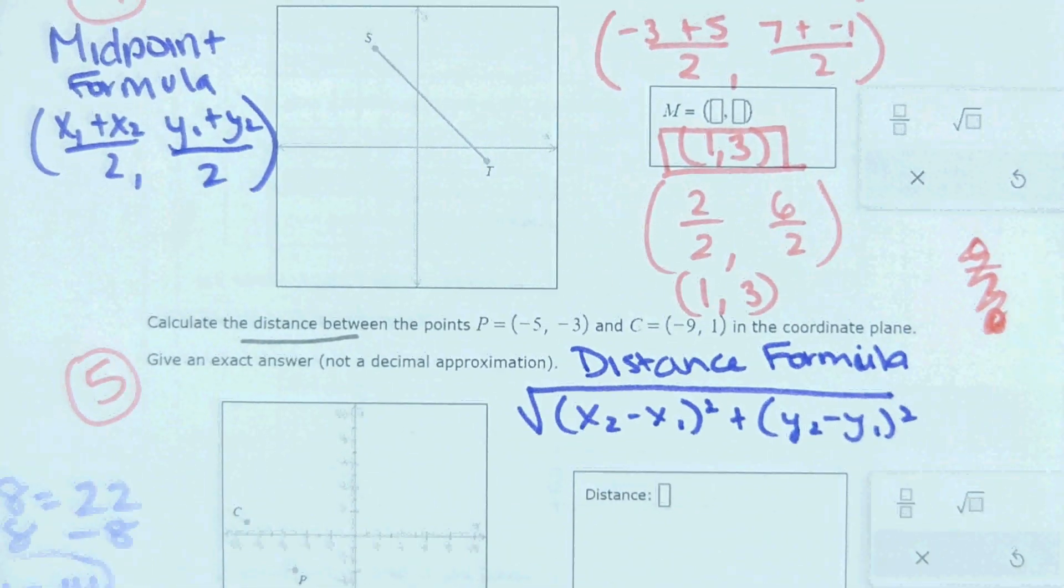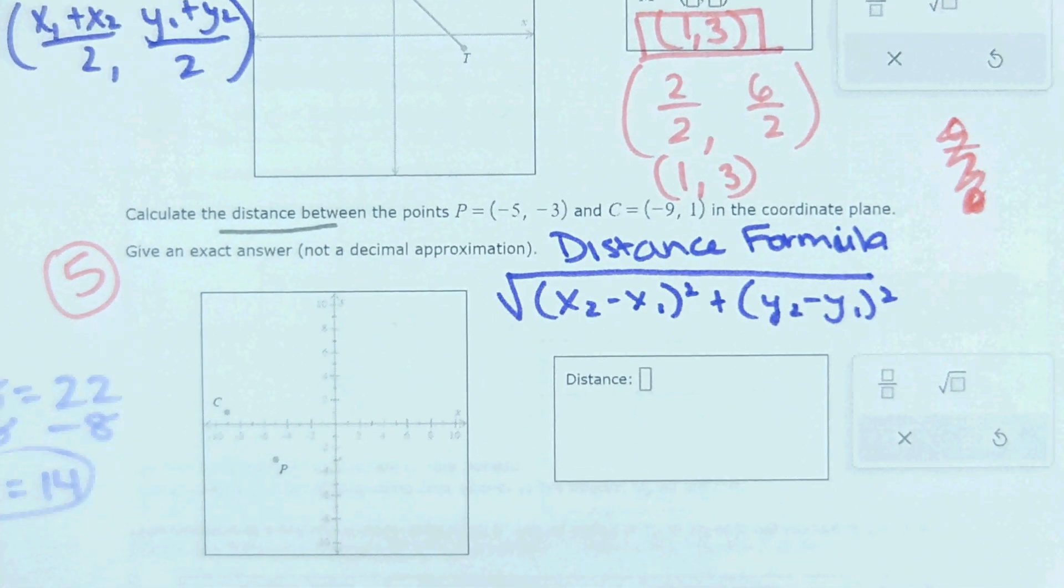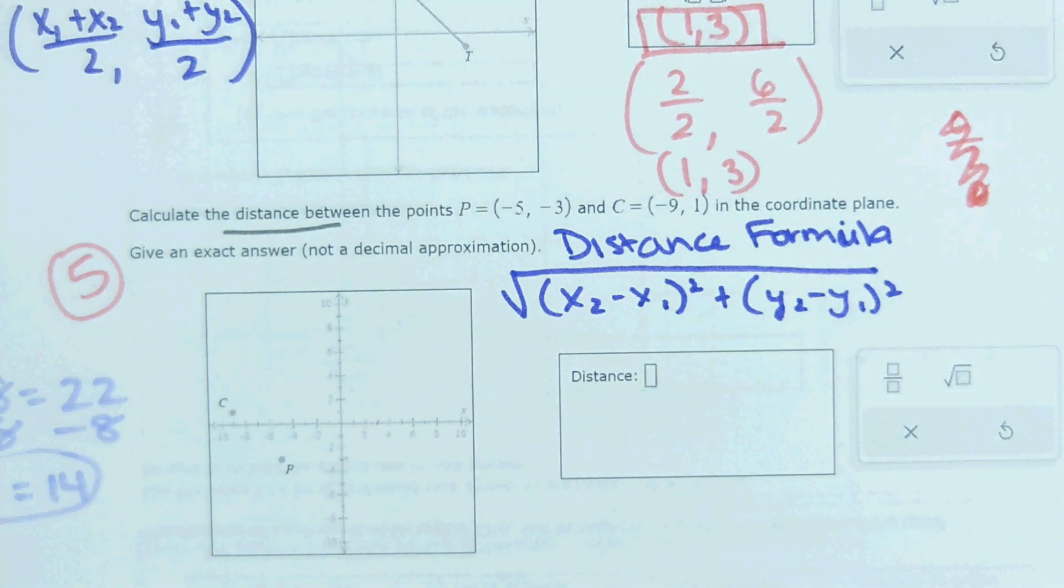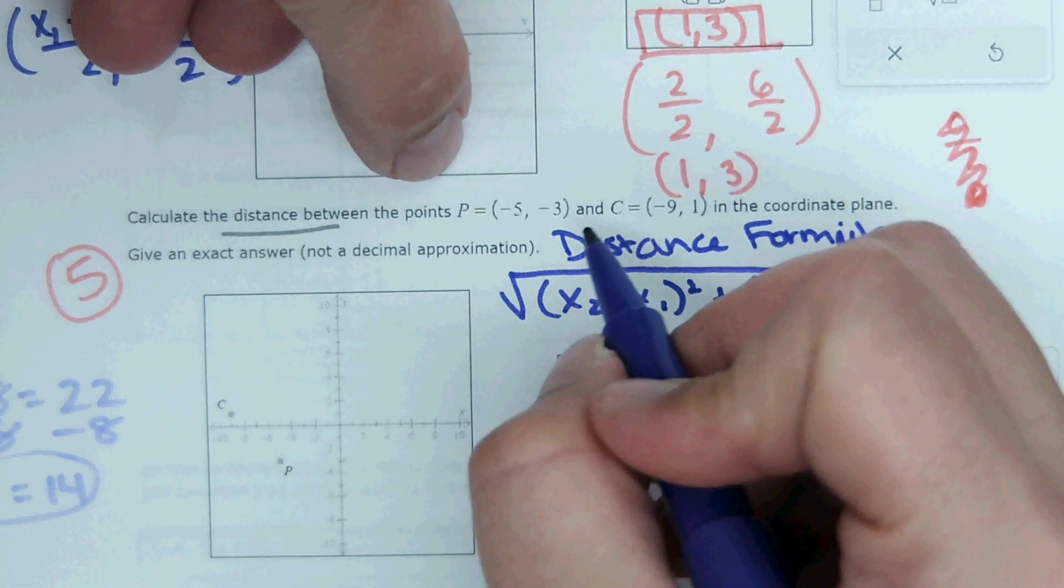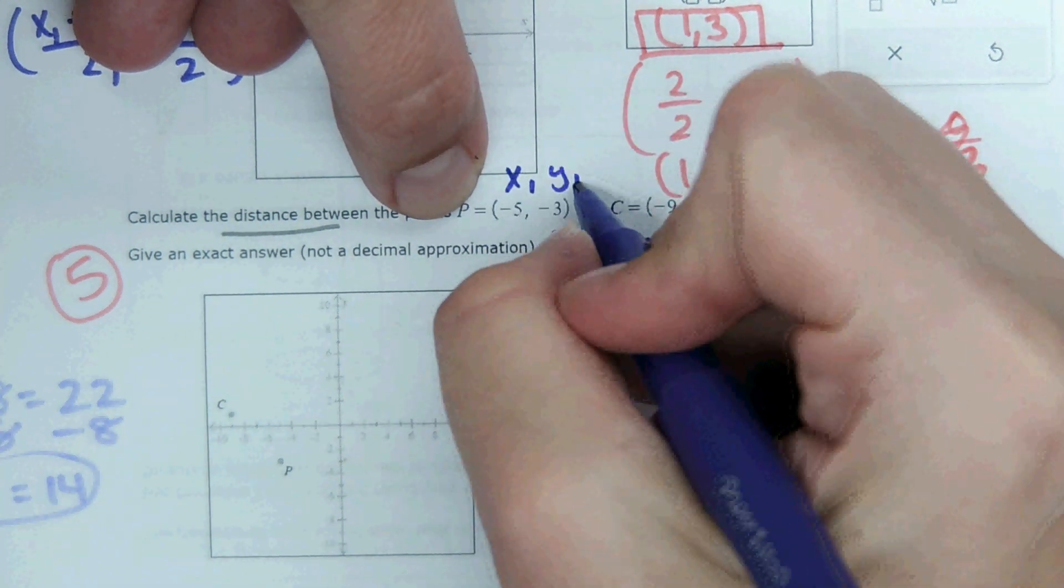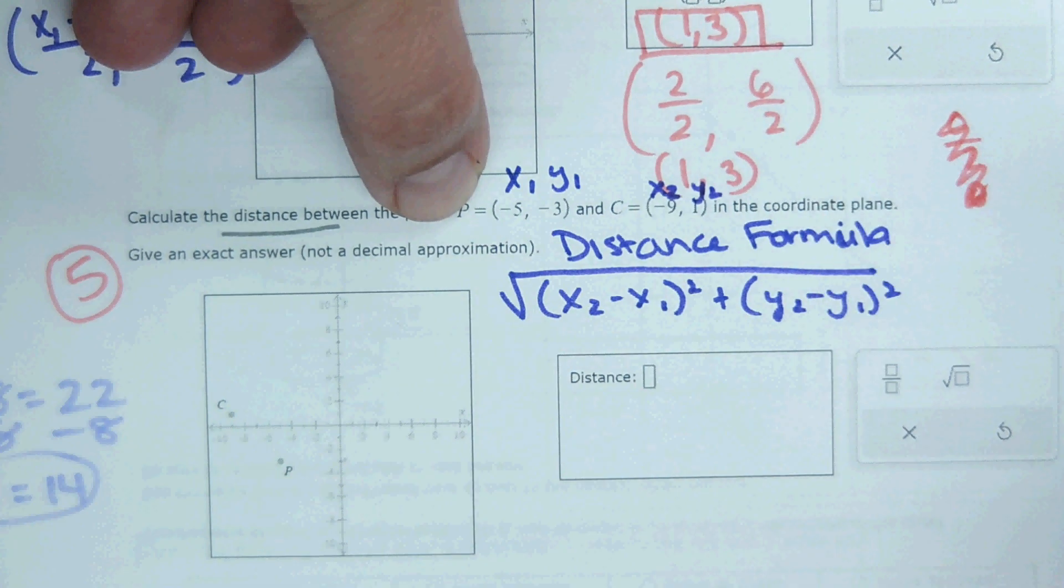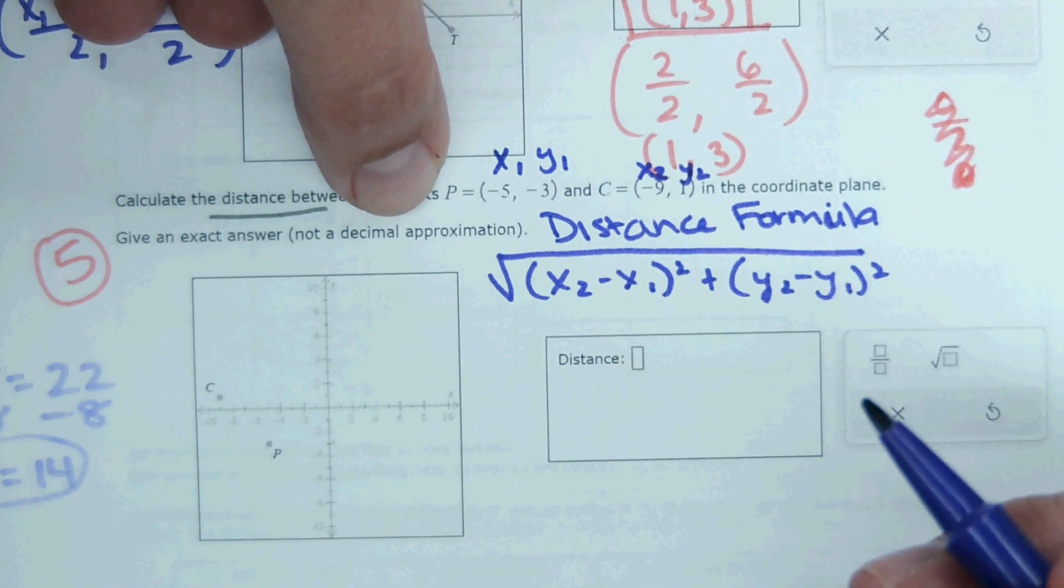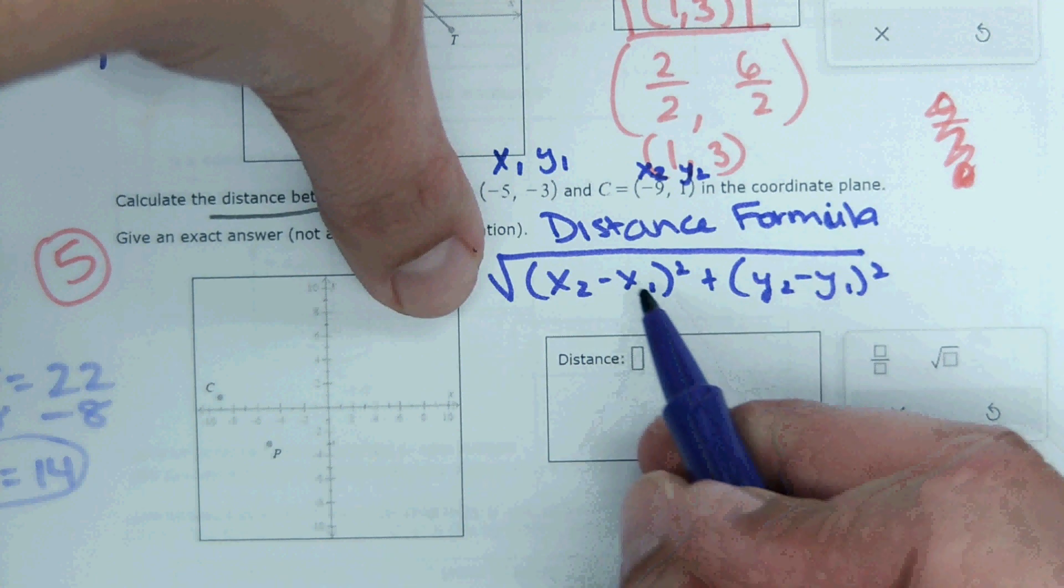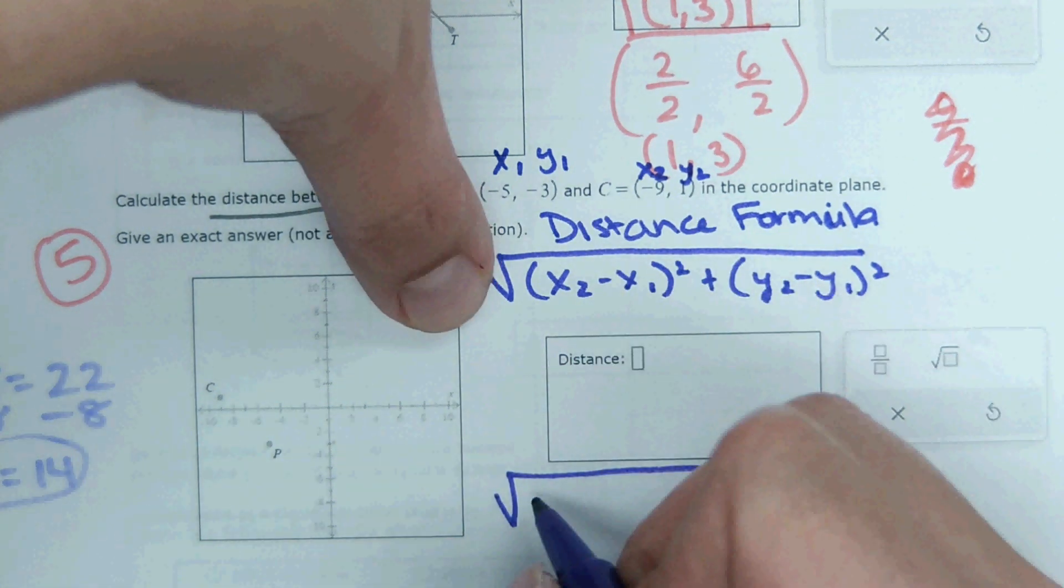Okay. Next one is distance formula. Another one that people stumbled on. Just because there's a lot of places that you can make errors. But one way to avoid the errors is by first writing down the equation and labeling the points. Like I said, I wish there was a shortcut to this, but there really isn't. If you label your points and write down the equation, you're a lot less likely to make a mistake. So, from here, now that I have things labeled, I'm just plugging it in. Negative 9 minus negative 5 squared.